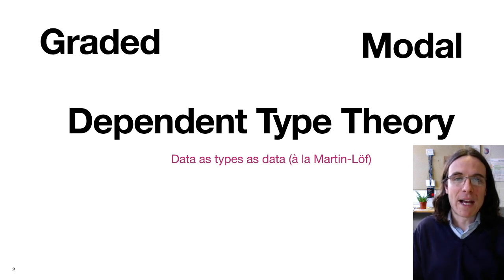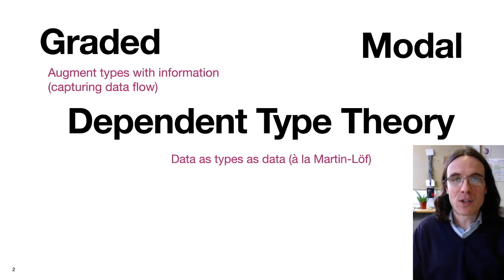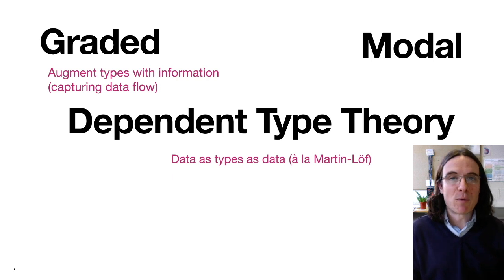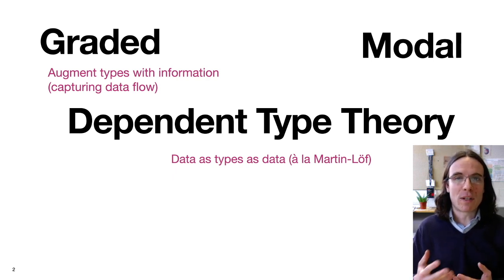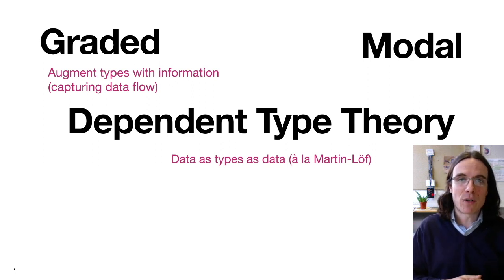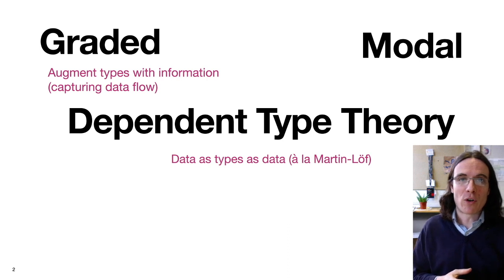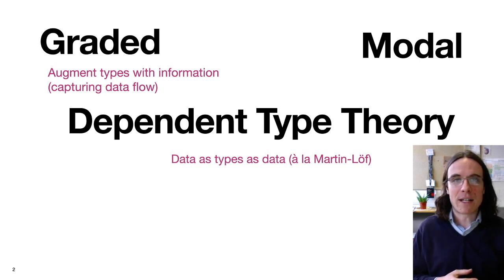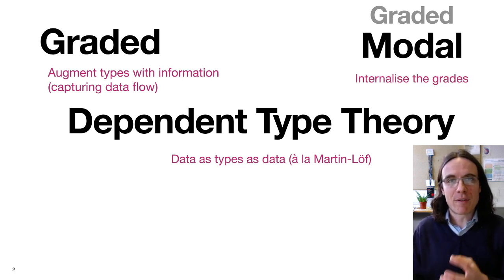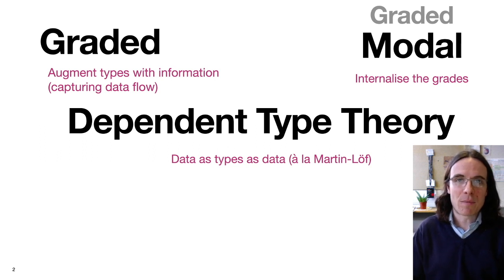Now we take this core theory and we add the notion of grading, which is another well-established idea in which we take a type theory and augment it with some structured information, which captures something about the underlying program structure or semantics. In this case, we're going to be looking at data flow in the program and capturing it via grading, which can be thought of as an annotation system providing some kind of static analysis. Alongside this, we have a notion of graded modality, which captures the information of this grading and internalizes it into the type theory.